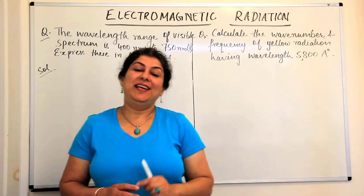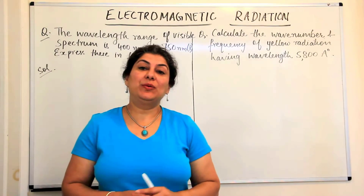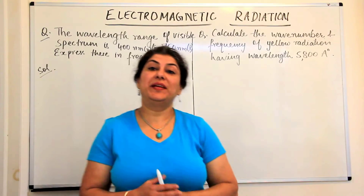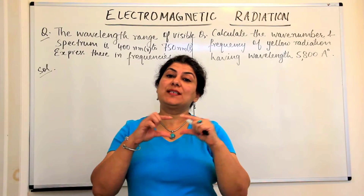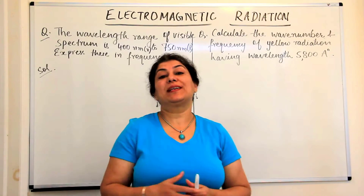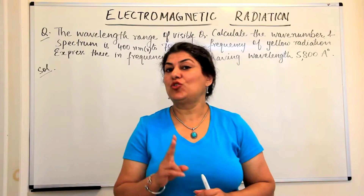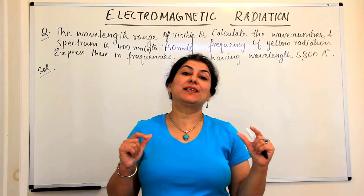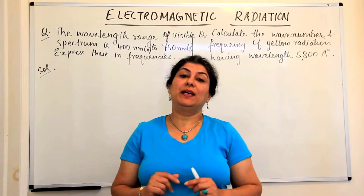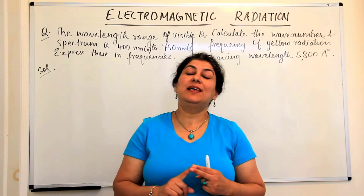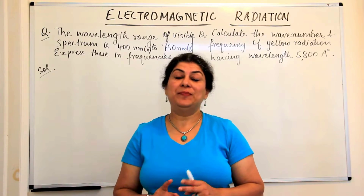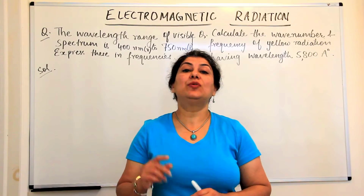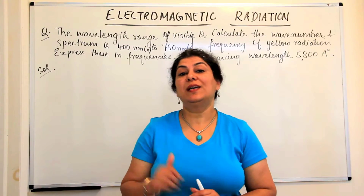Hello. In the previous video, we were discussing electromagnetic radiation and we discussed the electromagnetic spectrum. Let us solve two numerical problems based on the electromagnetic spectrum and the two formulae: C is equal to nu lambda, and wave number nu-bar is equal to 1 over lambda.